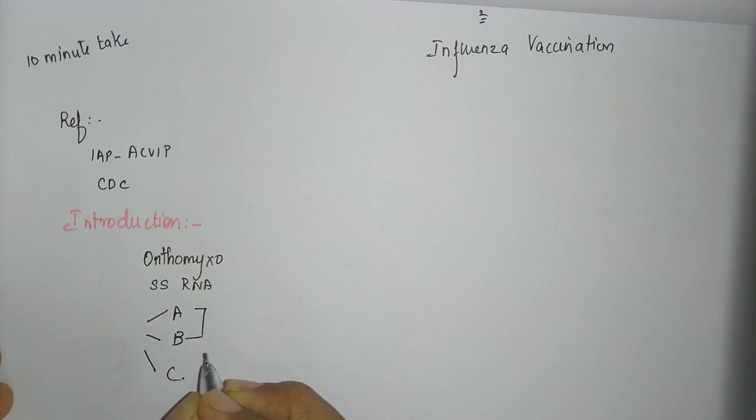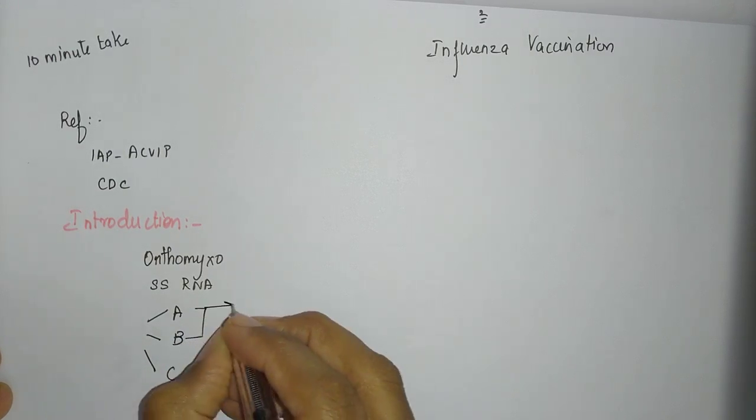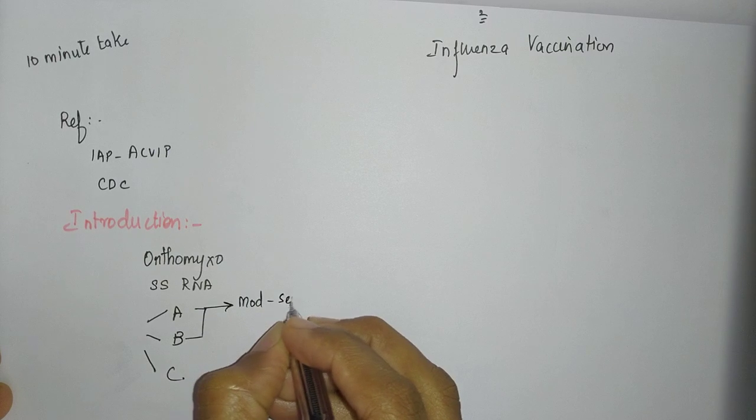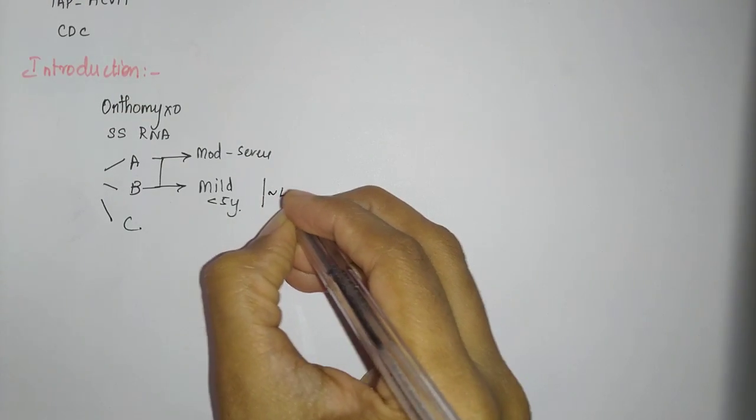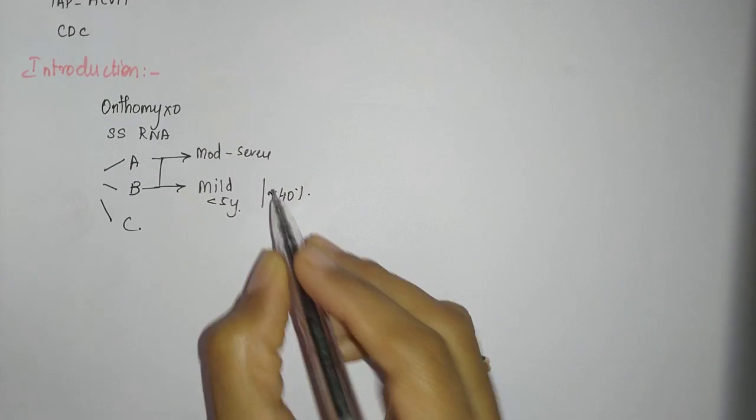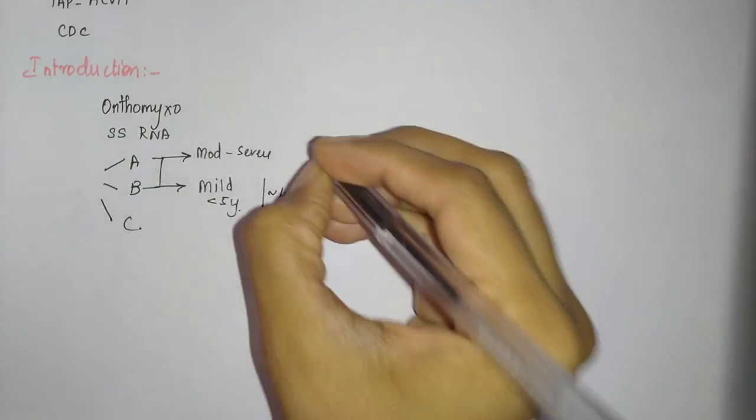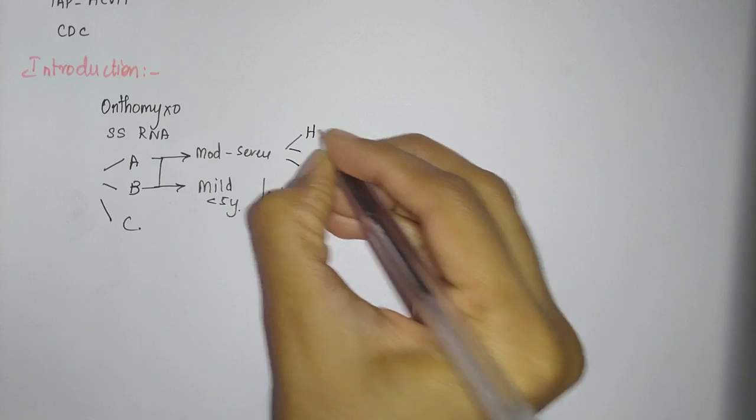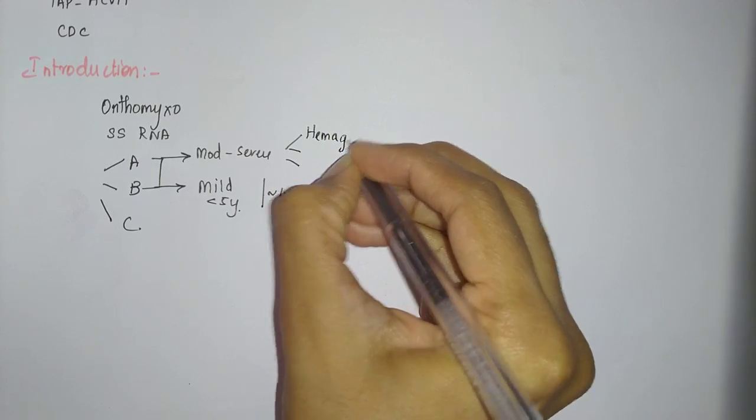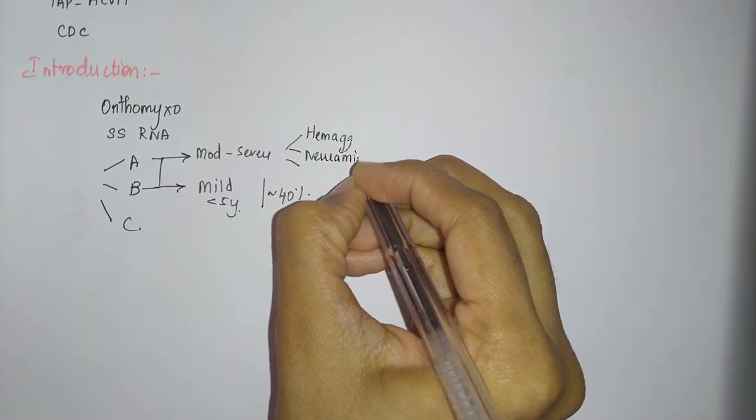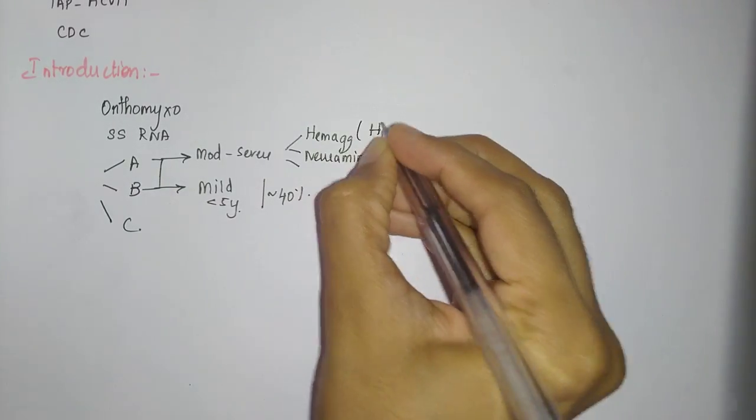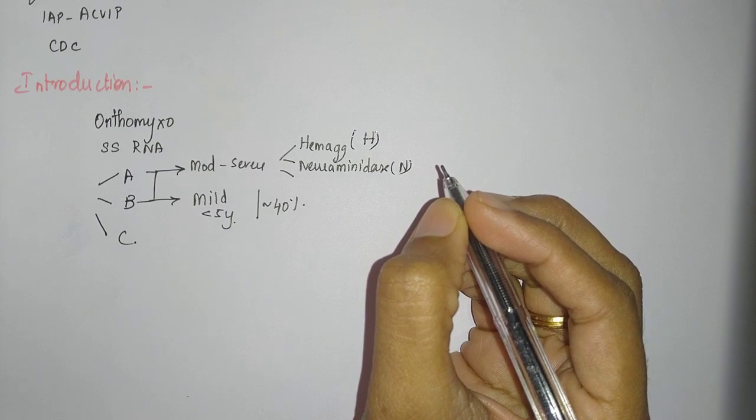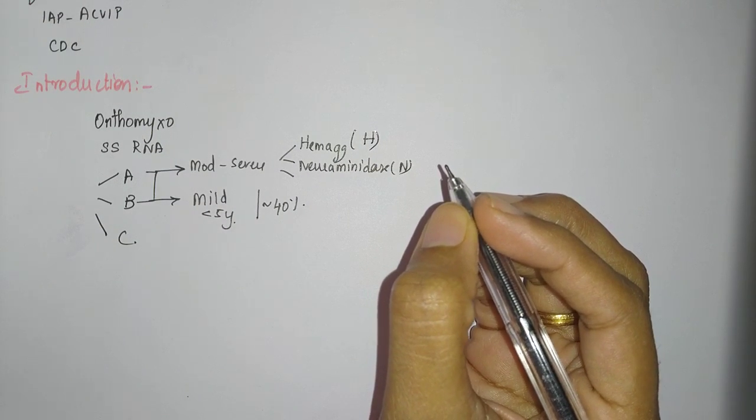A causes moderate to severe disease, whereas B causes mild illness, especially in the under-5 age group. Even though this is mild, it constitutes up to 40% of cases. This is from an Indian study. A is again divided into multiple types based upon the hemagglutinin and neuraminidase, which you write as H and N—H1N1, H5N1, H3N2, etc.